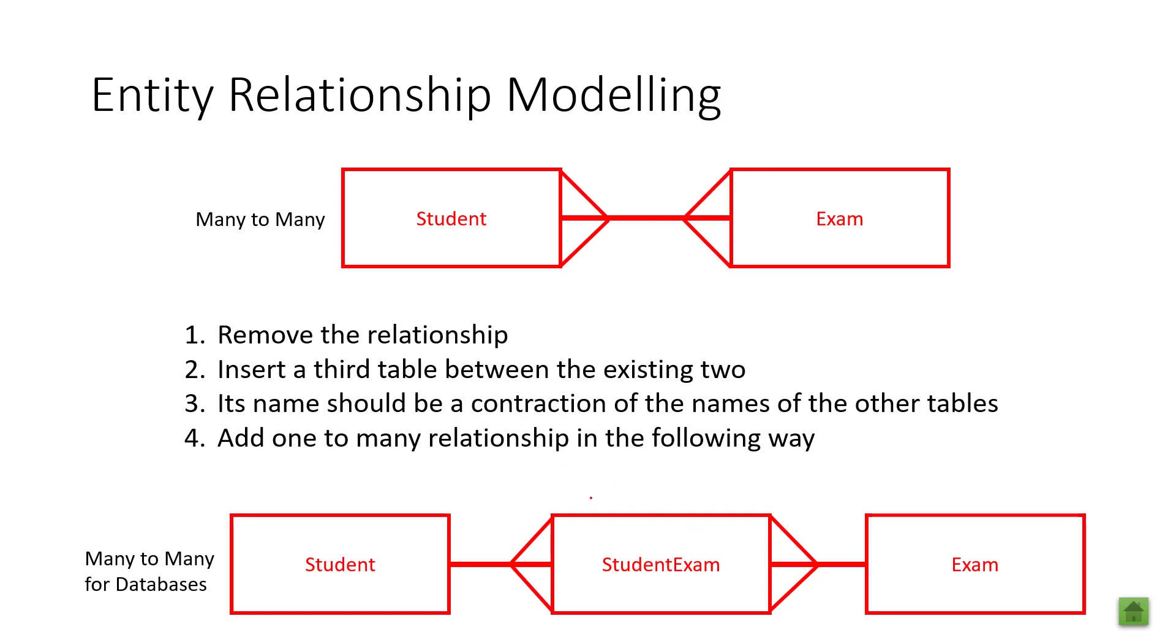We're then going to create a student exam. And that is normally a contraction of the two names of the tables. So, we take the student and we take the exam. We mush it together and contract it and we have student exam. And then what we do is we add one to many relationships in the following way. We add a one to many relationship going this way and a one to many relationship going this way. That means this table will have the two foreign keys that will be linked together to create a composite key.